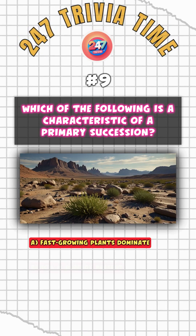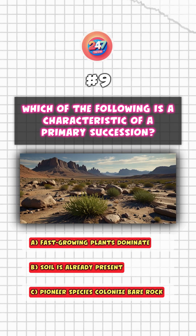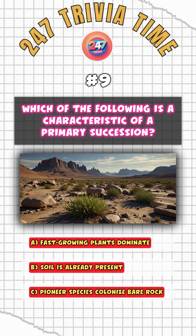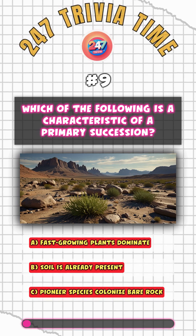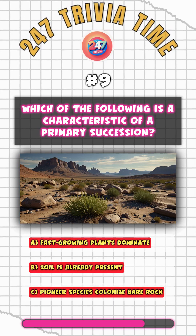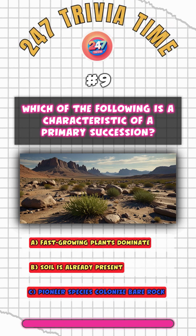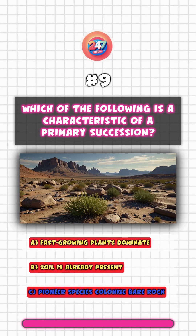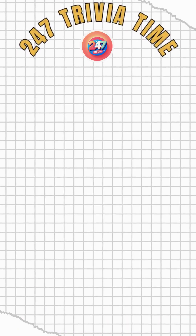Which of the following is a characteristic of primary succession? C. Pioneer species colonize bare rock.